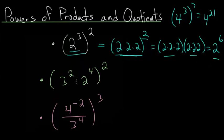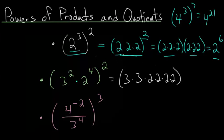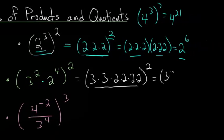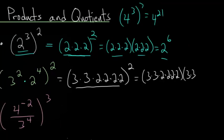What happens if we also have a product on the inside that's raised to some power? Let's think about this again from basic principles and see if we can derive a pattern. 3 squared is just 3 times 3, and 2 to the fourth is 2 times 2 times 2 times 2, and we're squaring this whole thing, so we have to multiply this whole expression by itself.